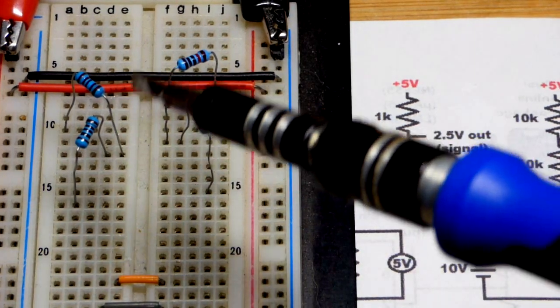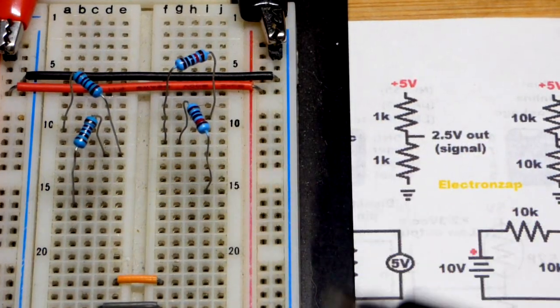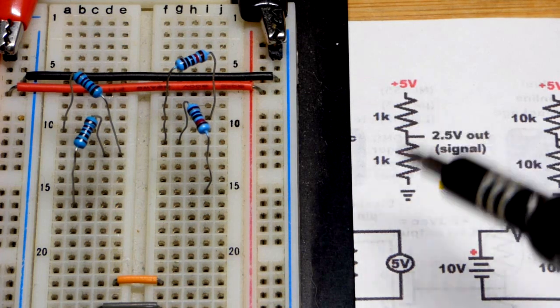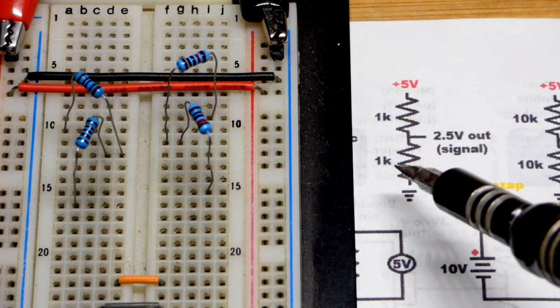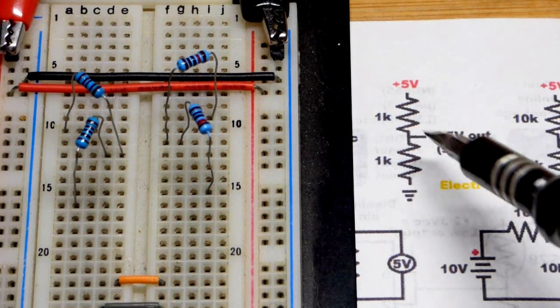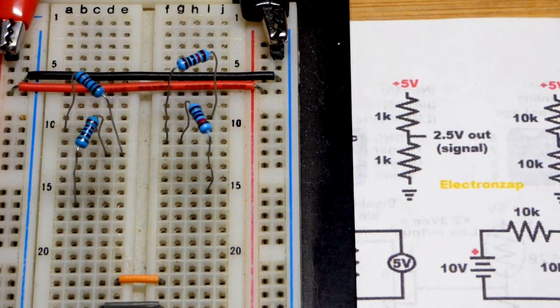On the left here we have 1000 ohm resistors which we'll look at with a multimeter later on when we connect them to a 5 volt power supply. Where they come together since they're equal value resistors we're going to have half of 5 volts, so 2.5 volts.